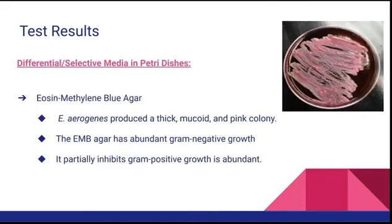Up to this point, my test results had matched both E. coli and E. aerogenes. The eosin-methylene blue agar told me that I had E. aerogenes because it produced a thick mucoid pink colony. E. coli would have produced a blue-black colony with a green sheen, so because I had this abundant pink colony, I knew that I had E. aerogenes, not E. coli.